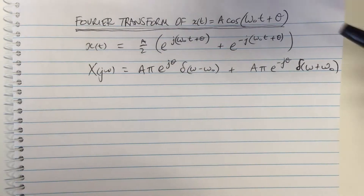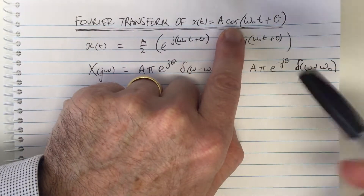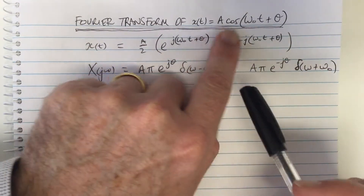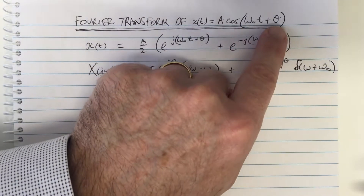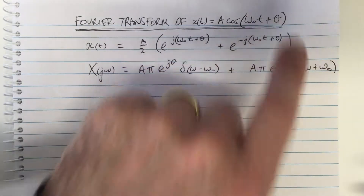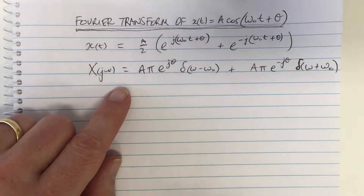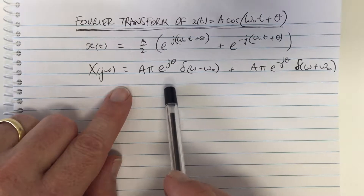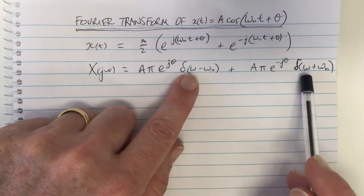We're going to look at the Fourier transform of a cosine wave, which has an amplitude A. It's at the frequency omega_0, and it has an offset of phase theta. We're going to try to understand how to interpret the equation for the Fourier transform. If you look up a set of Fourier transform tables, you'll find that the Fourier transform is the summation of two delta functions.